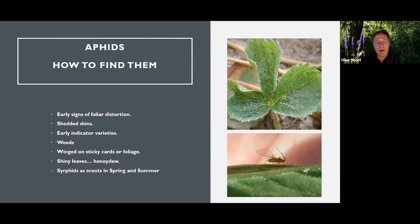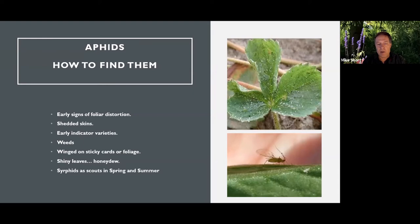Shiny leaves indicate honeydew, but that's a further-along sign. It will attract other aphid species to the area as well, so don't leave it too long — it can be washed off with soap and water. Syrphids are useful helpers with scouting in spring and summer. The adults are very good searchers that lay their eggs in aphid colonies. As long as there are no blooms, I watch them to see if they slow down and land on plants — their abdomen will twitch as if to lay an egg, indicating a nearby aphid colony.